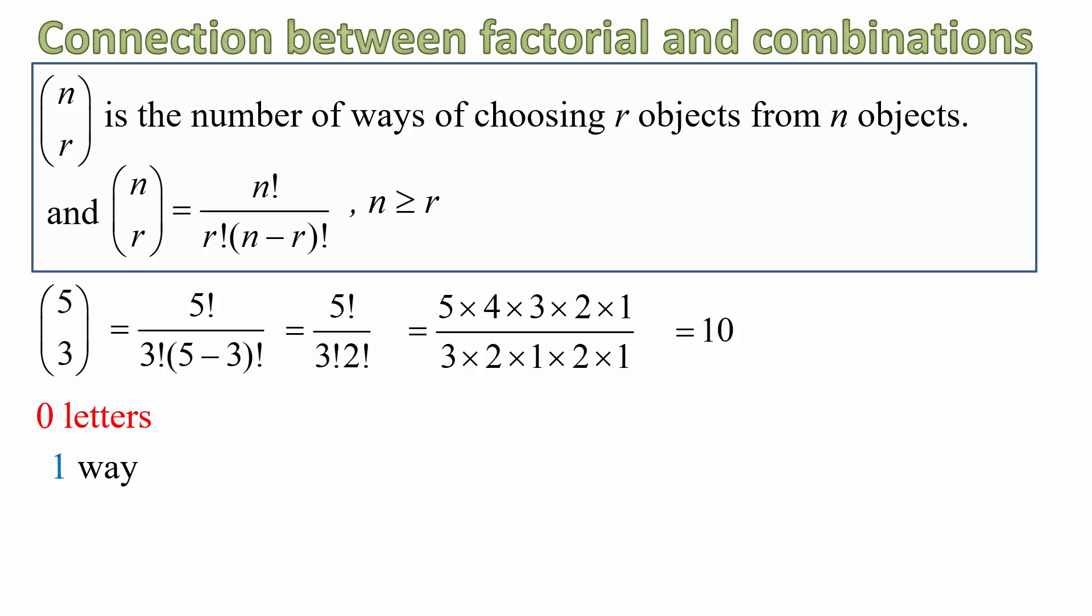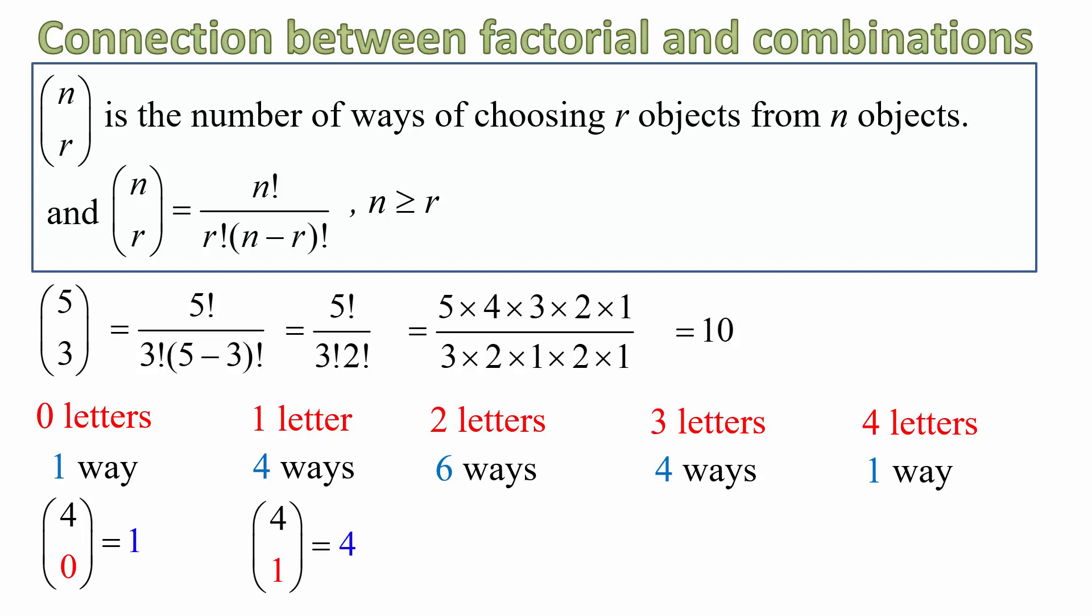And using this notation, for our previous example, we can write it as 0 letters up to 4 letters. Choosing 0 letters, there's 1 way we said, and we can write that as 4, 0. Choosing 1 letter, there are 4 ways. That comes out to be 4, 1. And so on.